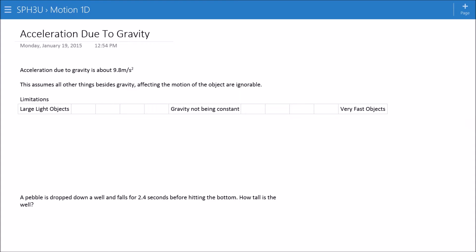What are the things that would really stand in the way of this 9.8 meters per second squared being realized? I highlighted three things here. Large light objects.